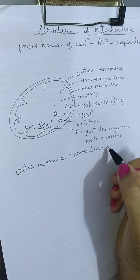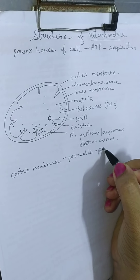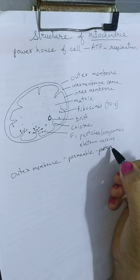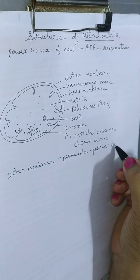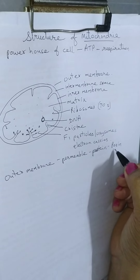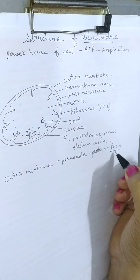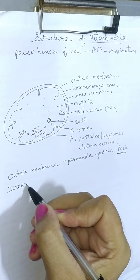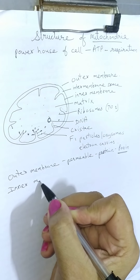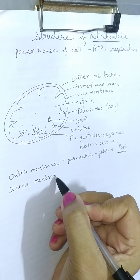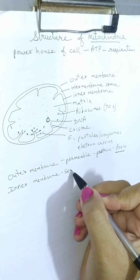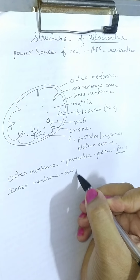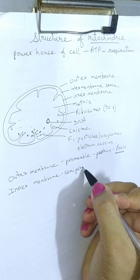The outer membrane is permeable because of the presence of a protein called porin. Due to the presence of porin, it allows substances to move in and out. The inner membrane is semi-permeable — it allows only some substances to move in and out of the cell.